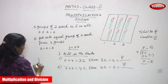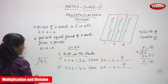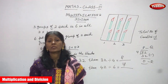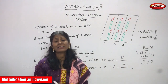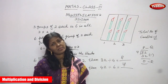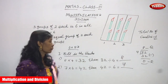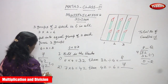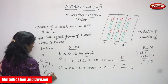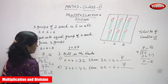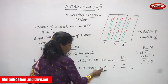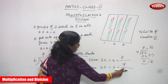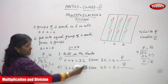Forty-two minus forty-two is zero, so remainder is zero and quotient is seven. Seven into six is forty-two, and forty-two divided by six gives seven. We also did the check method and the answer is confirmed as seven.